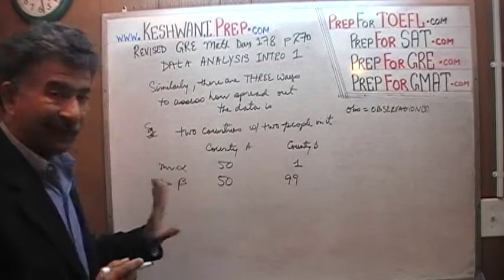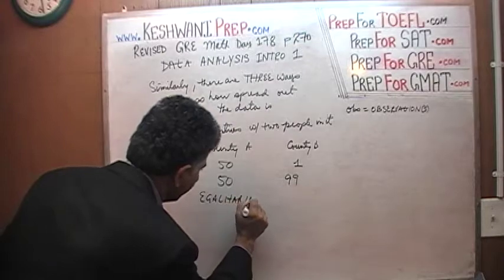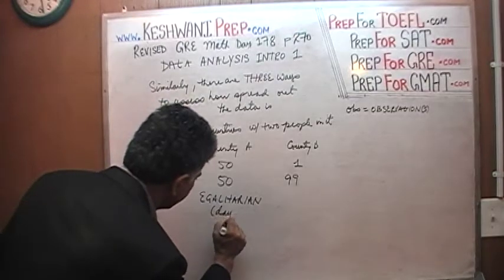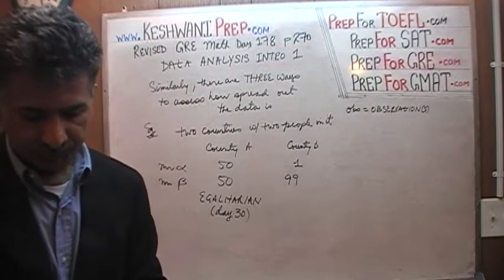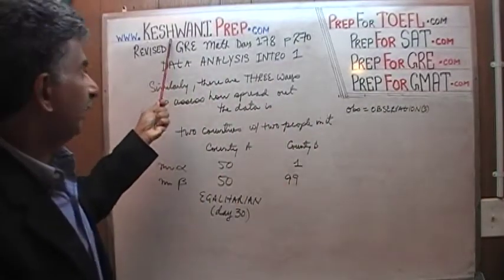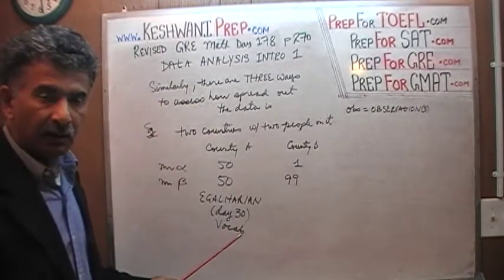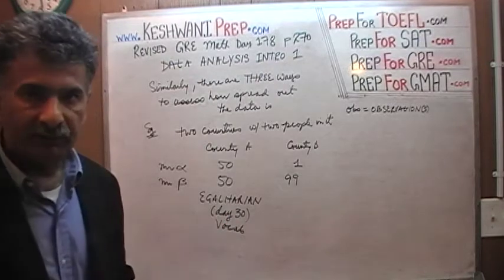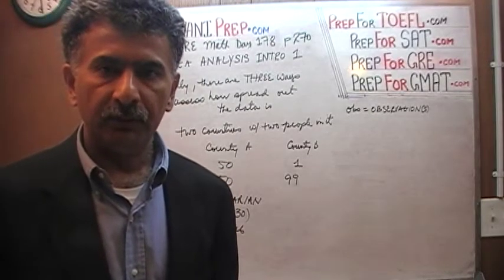Country A is egalitarian — I used that word and if you do not know what it means, just type in my name Keshwani and type in vocabulary, Day 30, and you will see this word in my vocabulary videos. Watch the video and you will learn that word along with other interesting words that will help improve your vocabulary and get a better score on the verbal part of the exam.